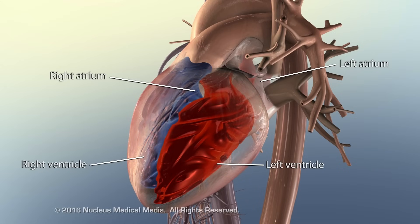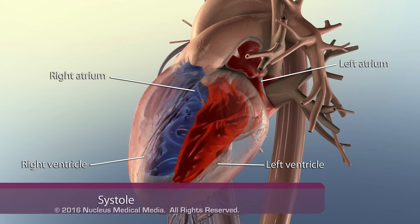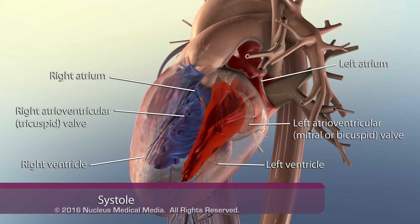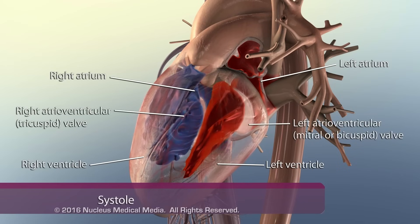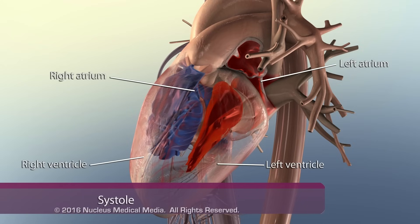During ventricular systole, the ventricles contract. The atrioventricular valves close, preventing backflow or regurgitation of blood into the atria.